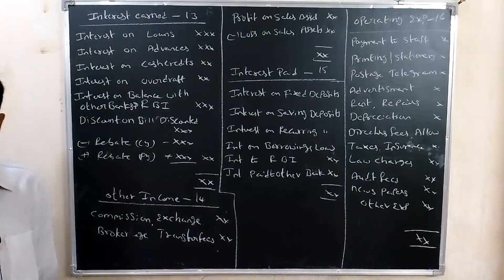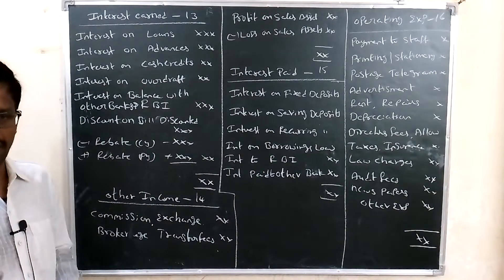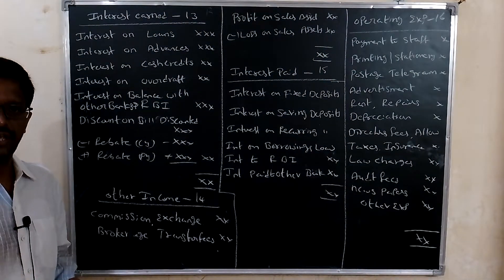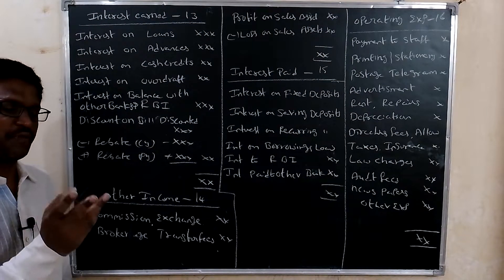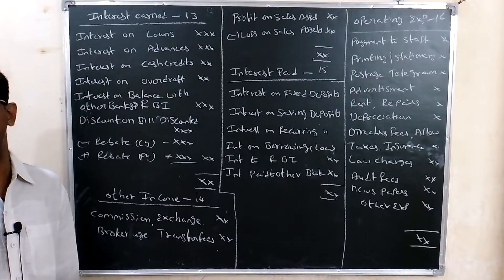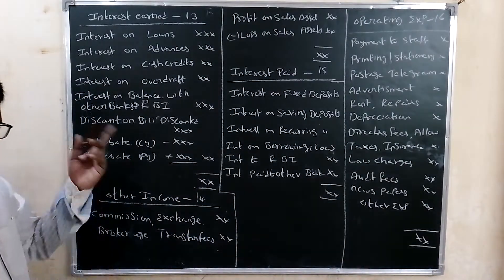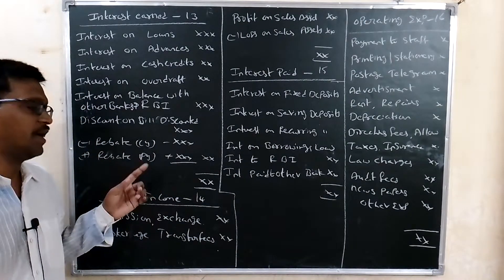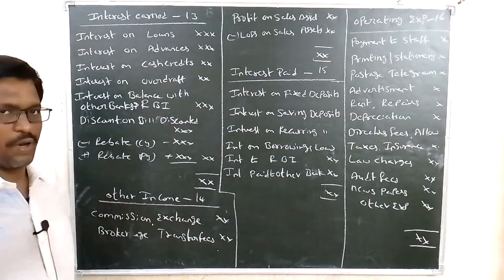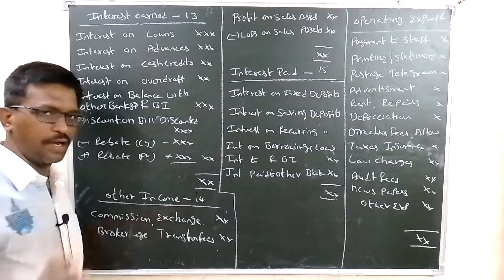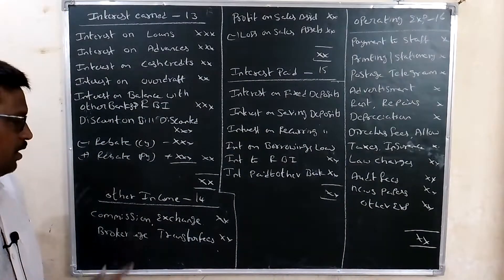Regarding rebate on bills discounted: the year ending closes in March. For a bill discounted with, say, three months remaining, the discount for February and March might be 100 rupees, and for April 50 rupees. The rebate means that the unexpired portion of discount is deducted — it is a minus item against income. This amount is substituted in Schedule 13.